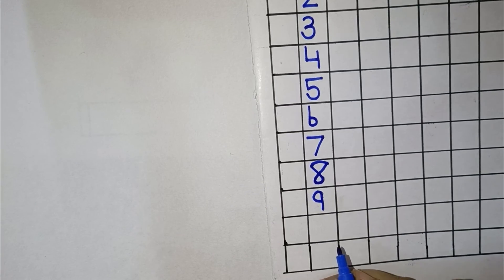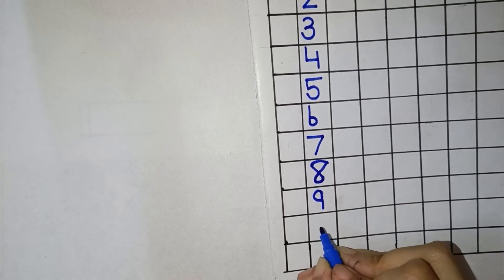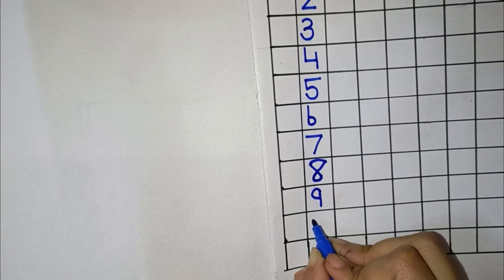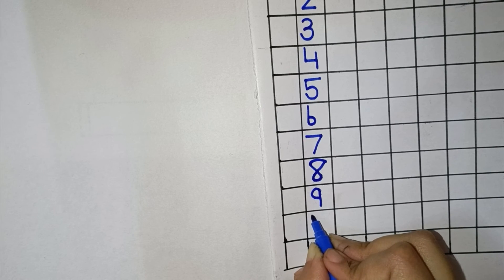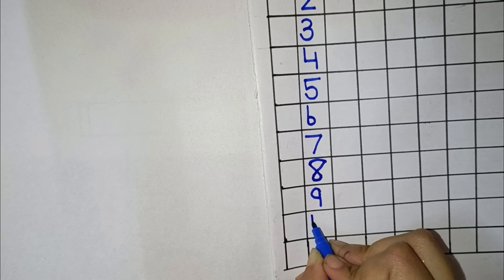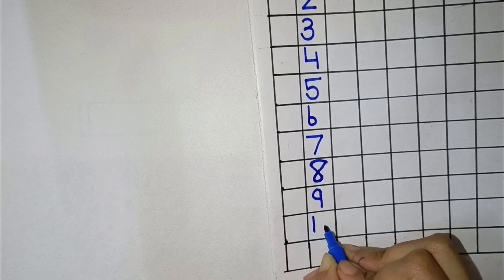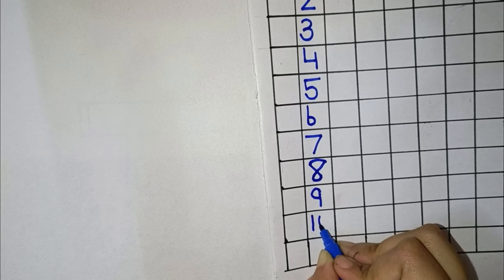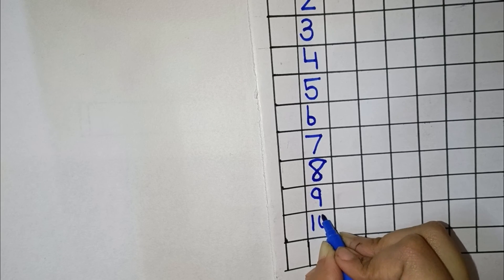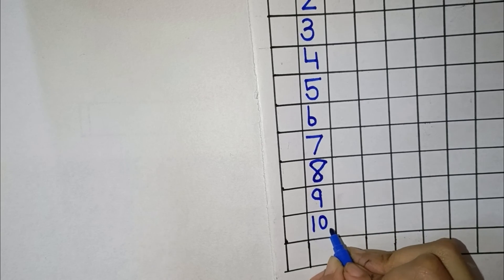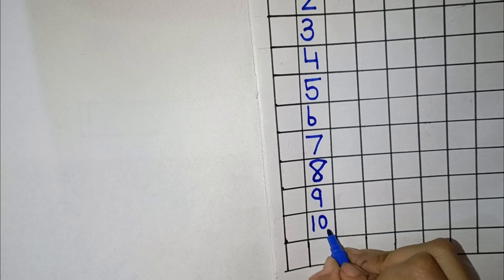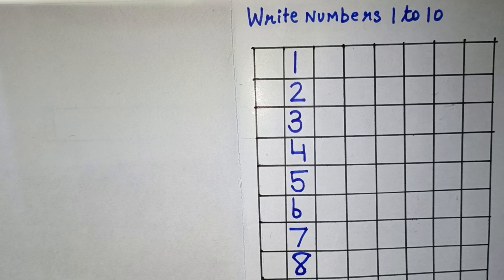Now the last number is 10. So for 10, we will draw a standing line and a round curve. This makes number 10. So this is all about today.